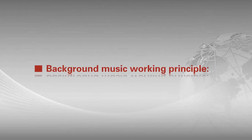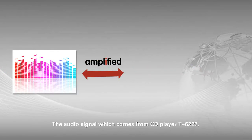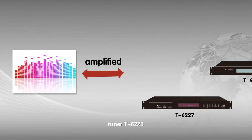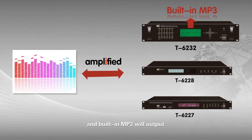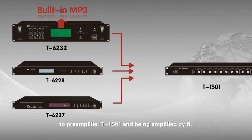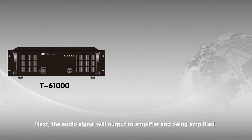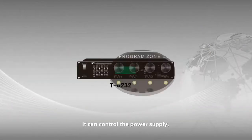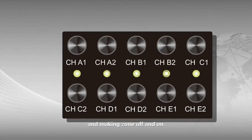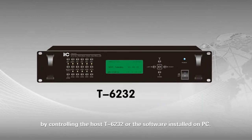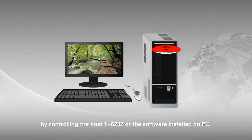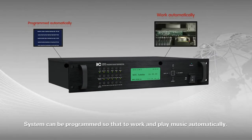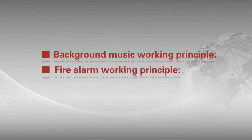Background music working principle. The audio signal from CD player T6227, tuner T6228, and built-in MP3 outputs to pre-amplifier T1SO1 and is amplified. The audio signal then outputs to the amplifier for further amplification, then to the line interface of paging controller T6212A, and then to the speaker. The system can control power supply, music play, and zone on/off through the T6232 controller or PC software, programmed to work and play music automatically.